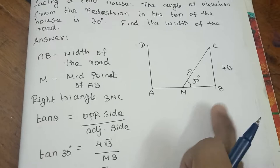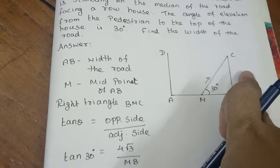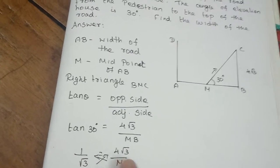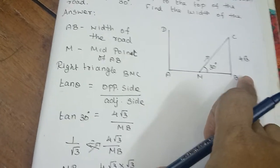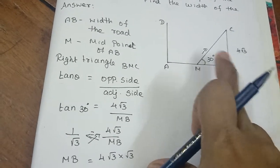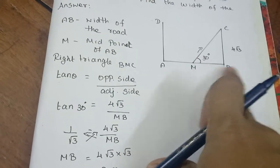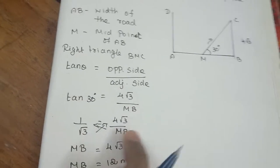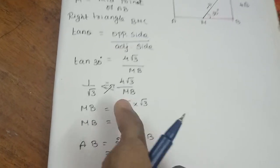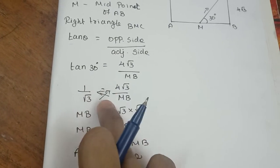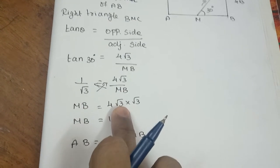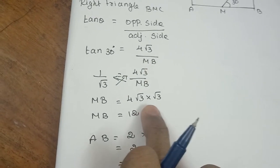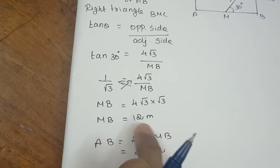Again, we use the trigonometric ratio. The formula is opposite side divided by adjacent side — that is tan. The opposite side is 4√3. The adjacent side is MB, which is the half-width of the road, since the pedestrian is standing at the midpoint. So tan 30 equals 4√3 divided by MB. From the trigonometric table, tan 30 is 1/√3. So 1/√3 = 4√3 / MB. Cross multiplying, MB = 4√3 × √3 = 4 × 3 = 12 meters.